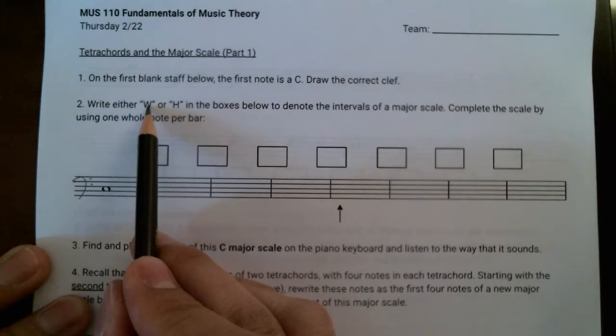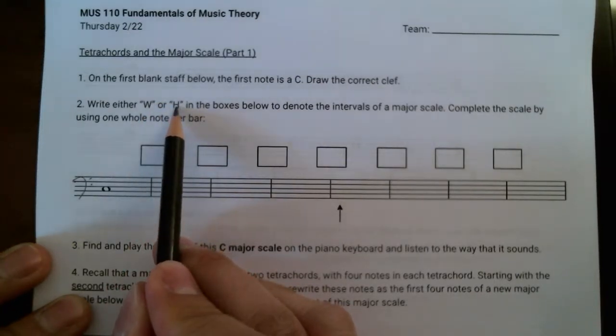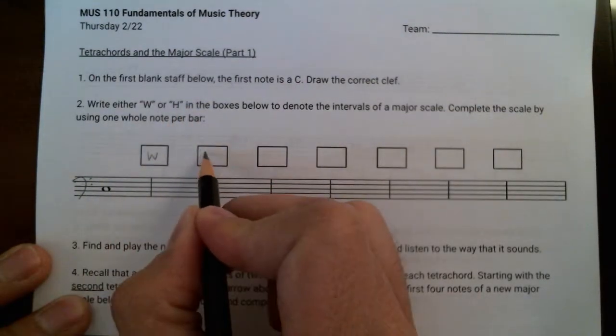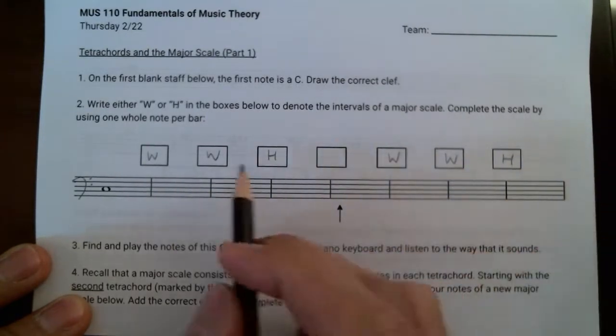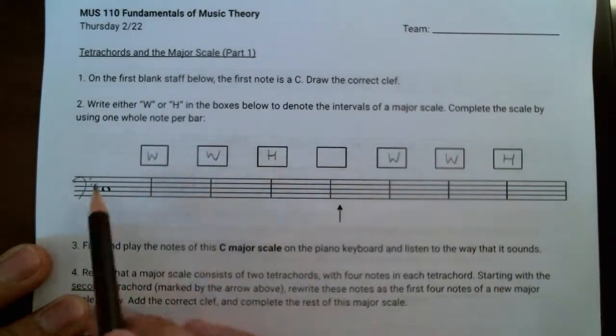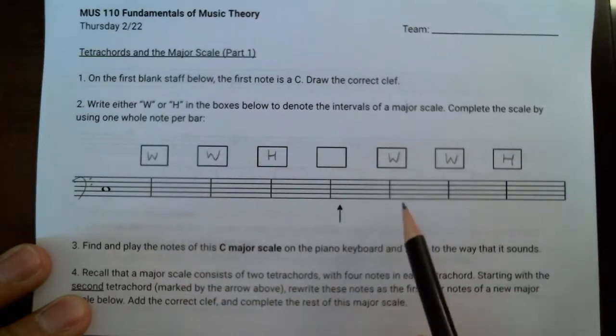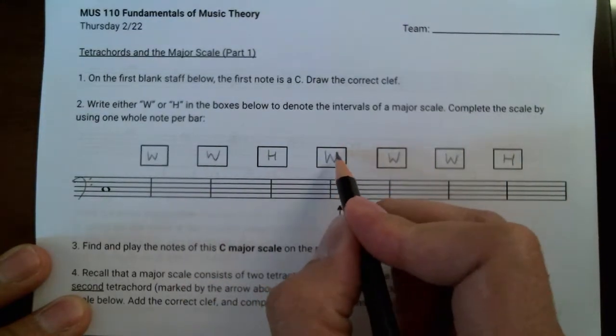Next, I'm going to write either W or H to denote the intervals of the major scale. Remember that the major scale is made up of two tetrachords, each one with a pattern of whole, whole, half. And these two tetrachords, these four notes, are connected together by another whole step.